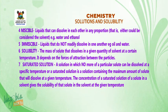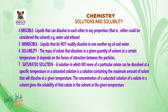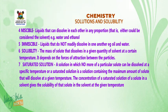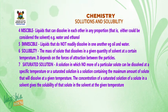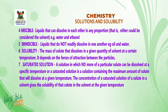Number four: miscible — liquids that can dissolve in each other in any proportion, that is, either could be considered the dissolving medium, e.g., water and ethanol. Number five: immiscible — liquids that do not readily dissolve in one another, e.g., oil and water. Number six: solubility — the mass of solute that dissolves in a given quantity of solvent at a certain temperature. It depends on the force of attraction between the particles.